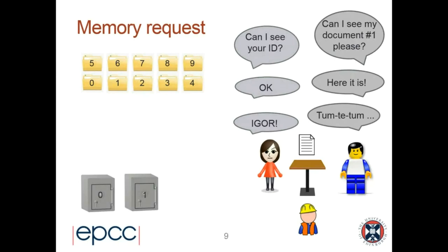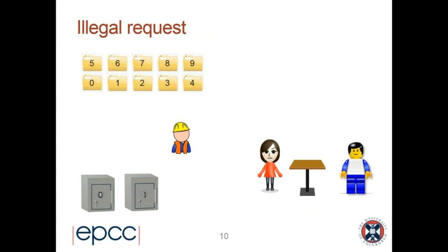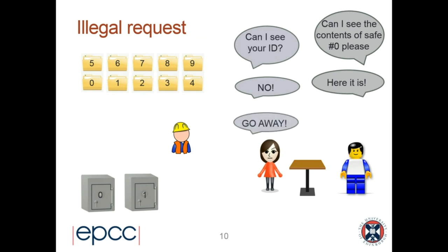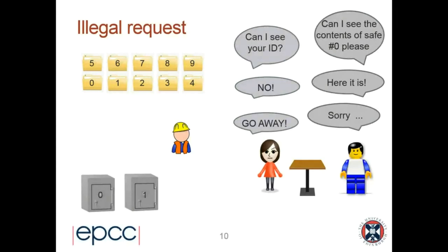For an illegal request, I say 'Can I see the contents of safe number zero please?' She checks my ID and says 'No, you can't — go away.' I apologize and leave. That seems very clear. There doesn't really seem to be a problem here. But there is one design decision that's been made — Good Intention One.